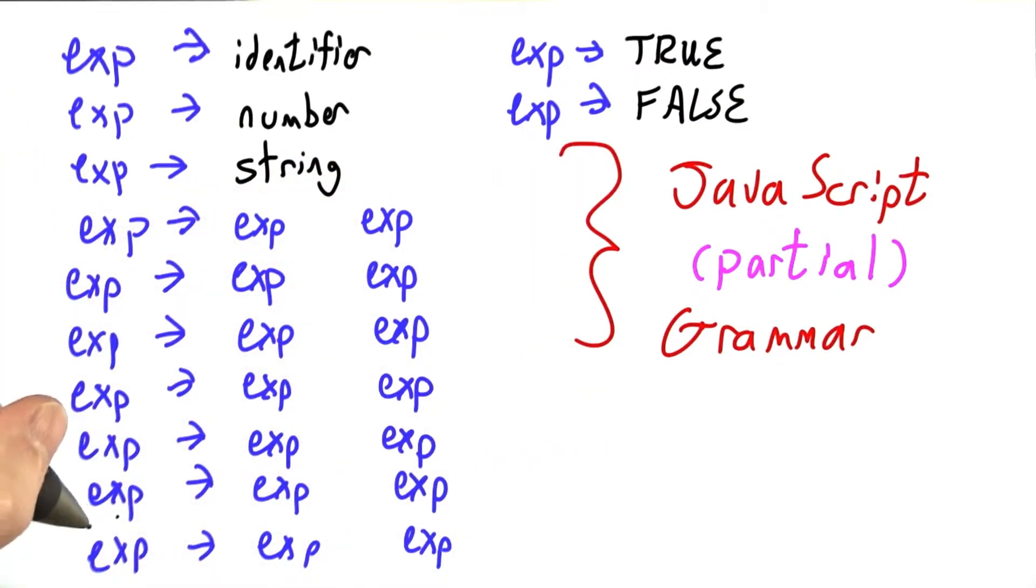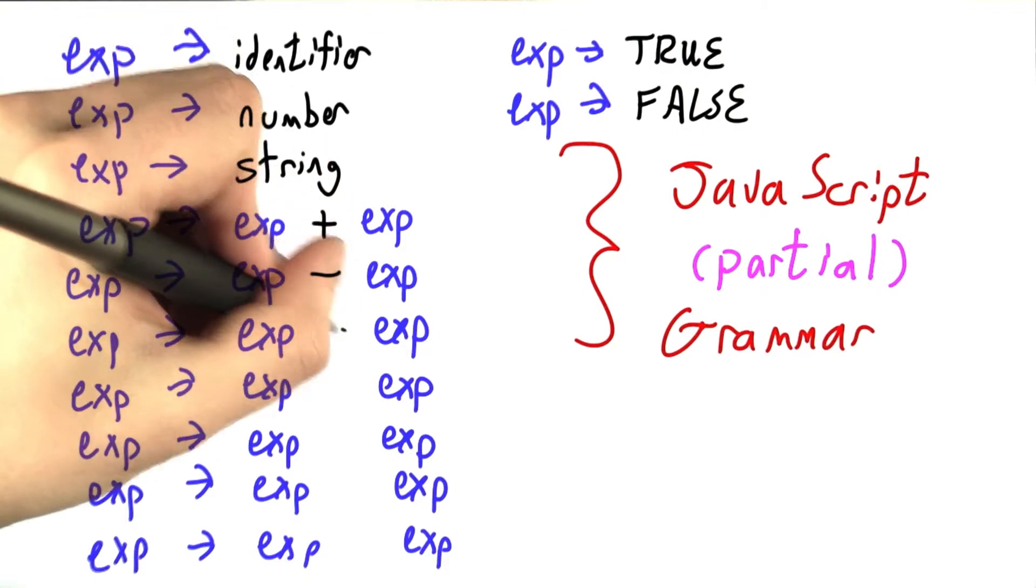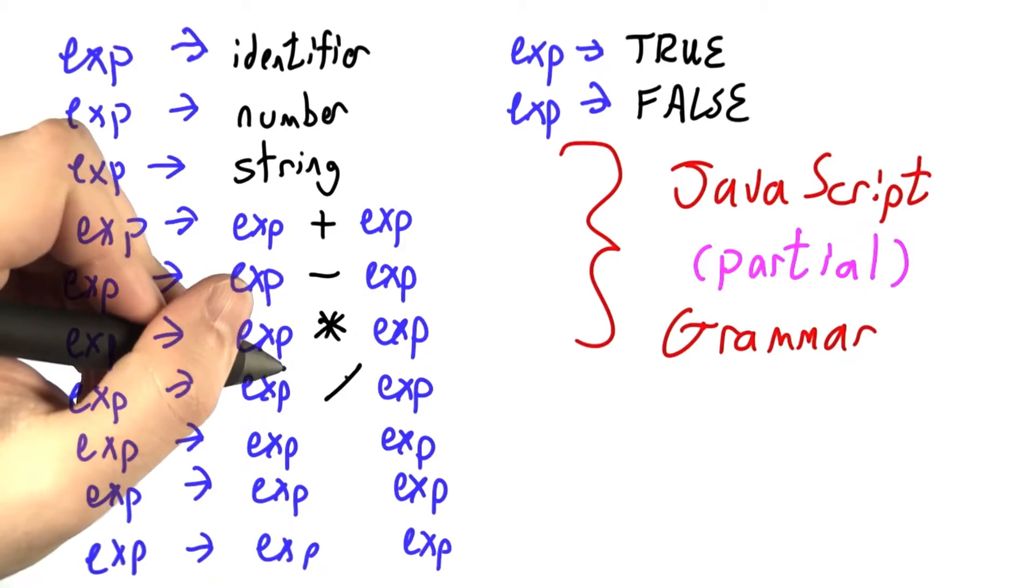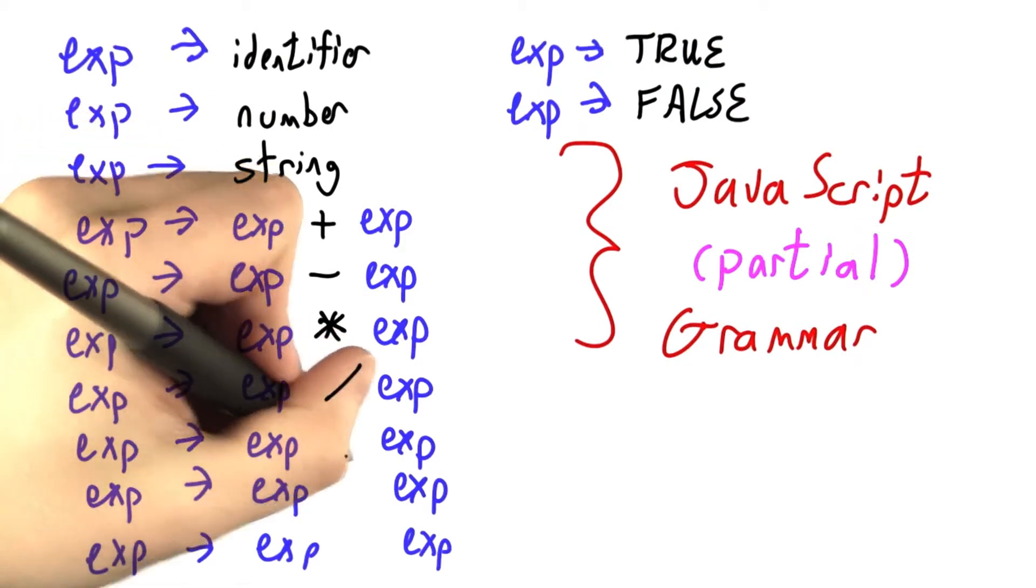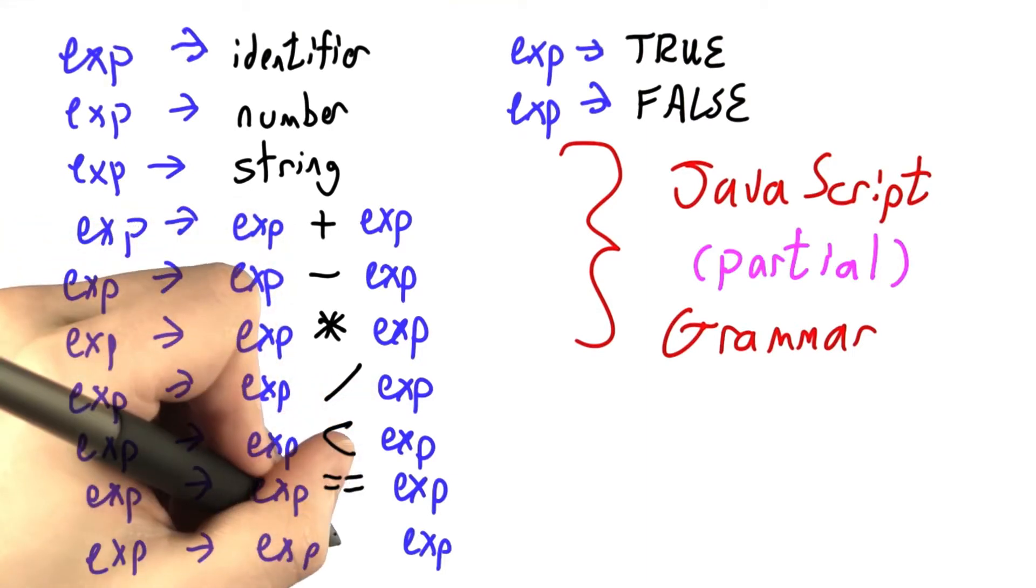And then a large number of binary operators. If you have two expressions, you can add them together, subtract them, multiply them, divide them. Watch out for division by zero. You can compare them to see if one is less than the other. You can compare them to see if they're exactly equal.